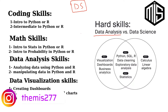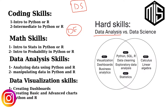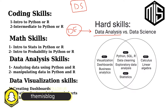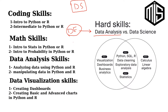We have the data engineer, who gets the data from social media, ERP systems, or wherever, and then gives it to the data analyst. The data analyst checks the data, does statistical analysis, charts, normal distribution, and so on — basically checking if the data is correct — and then transfers it to the data scientist.